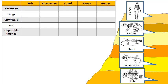To begin, let me look at this table. I'm going to put an X underneath the name of every organism that has a backbone. You can see the human, the mouse, the lizard, the salamander, and fish — these are all vertebrates. They all have backbones.